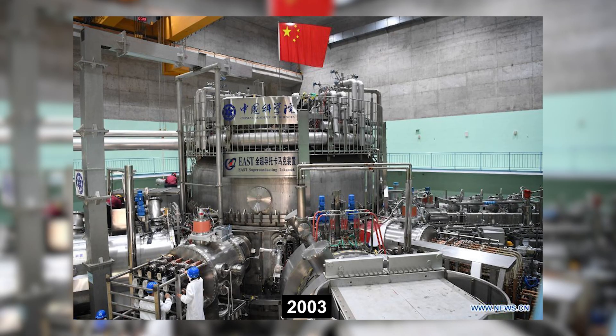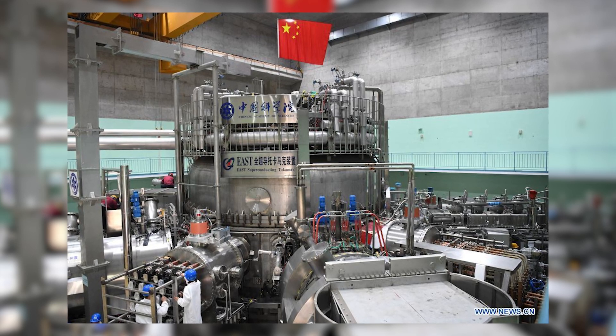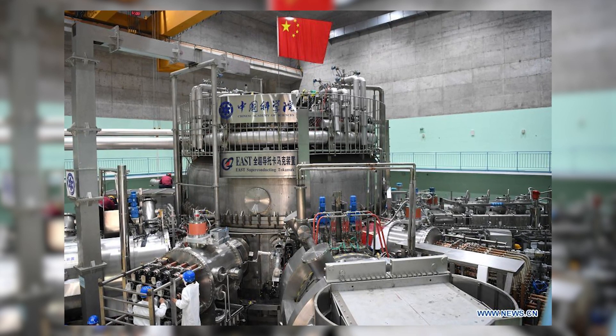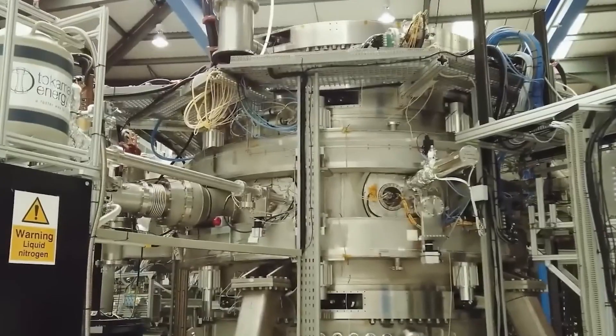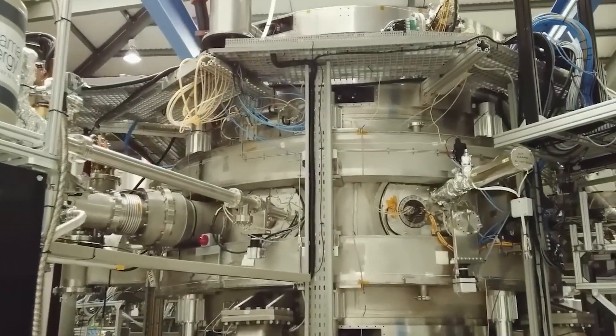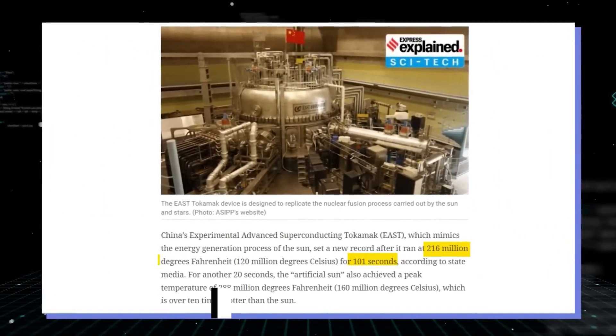In 2003, EAST surpassed the achievement of France's Tore Supra Tokamak by sustaining similar temperatures within a cooling loop for a duration of 390 seconds. Furthermore, EAST achieved a remarkable milestone a year ago, operating for 101 seconds at a scorching temperature of 216 million degrees Fahrenheit or 120 million degrees Celsius.